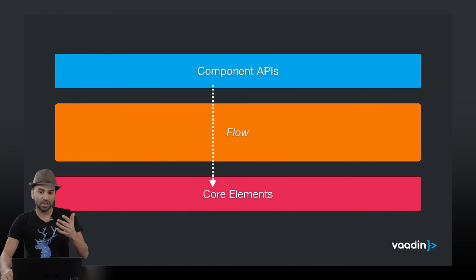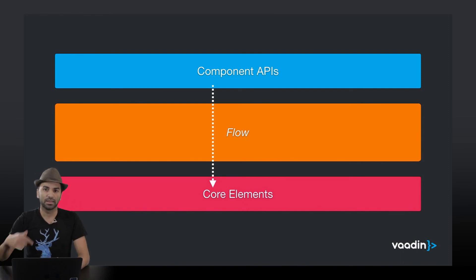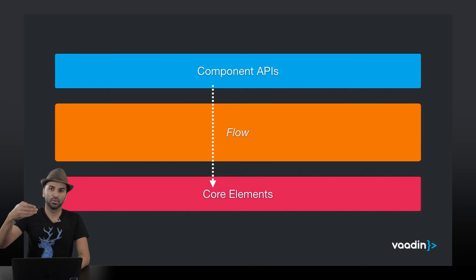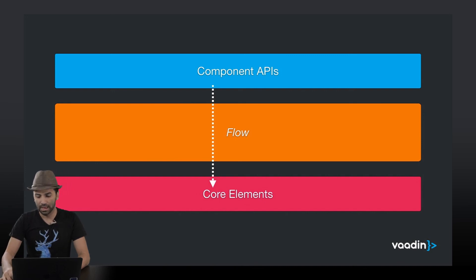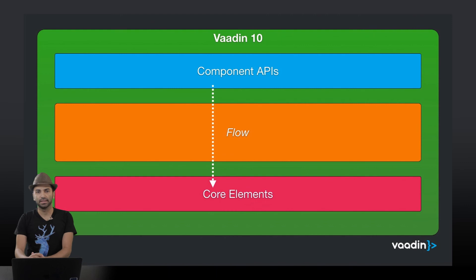The components APIs are going through Flow to make the connection between the server-side and the front-end. And all of these together, we call it VADEN 10.